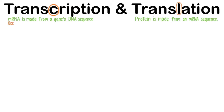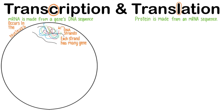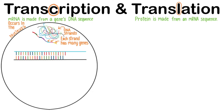Transcription occurs in the nucleus of eukaryotic cells. DNA strands are represented here with these colorful lines. Each strand has many gene sequences, each represented with a different color here. We'll look at a single gene on one segment of DNA. In reality, this could be thousands of base pairs long, but I will be simplifying the size of all these products throughout this video.